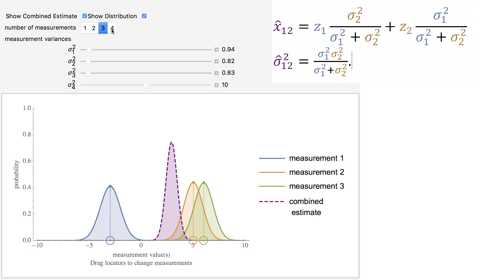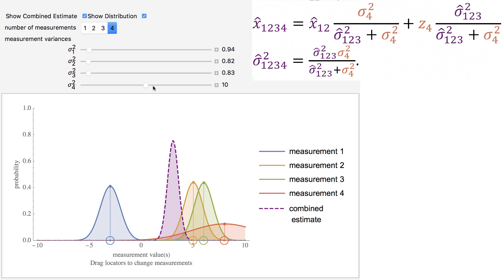The process can be done recursively according to Bayes' theorem. I take the output from combining two measurements and combine this with the third measurement. Then I can use this output and combine it with the fourth measurement.